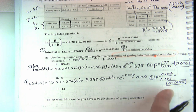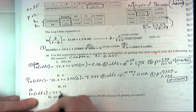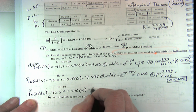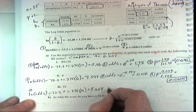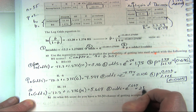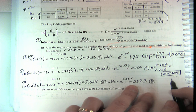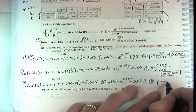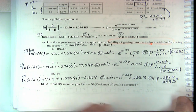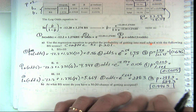For a score of 14: log odds equals negative 12.2 plus 1.276 times 14, giving 5.664. The odds equals e to the 5.664, which is 288.3. The probability is 288.3 over 289.3, which gives 0.9965, or 99.65% chance of getting into med school — very close to 1 but never exceeding it.